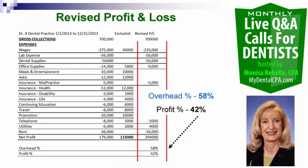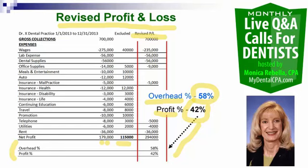Slide four is the revised profit and loss. I'm taking the original P&L — $700,000 in collections for Dr. X with profit of $179,000 — and adding back all those expenses that are clouding the true profit of the practice. That's another $115,000 added to our revised profit and loss. This revised P&L represents the true overhead and profit of the practice. The true overhead is 58% with a profit of 42%. The doctor is actually getting almost $300,000 from this practice — that's a pretty good return.